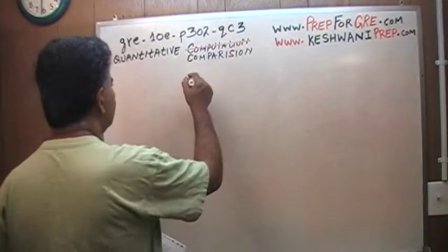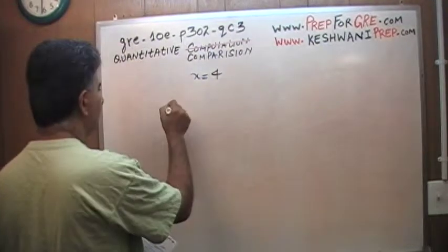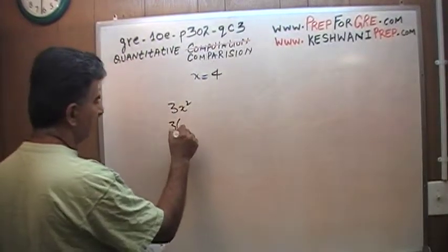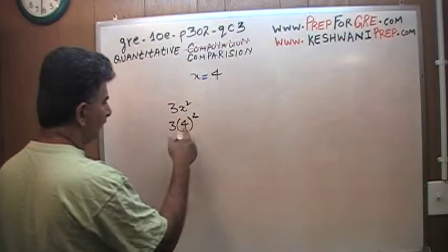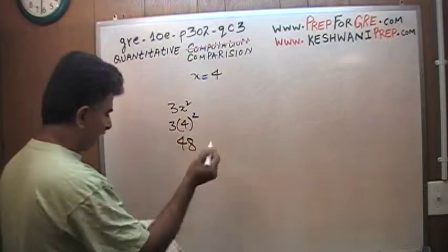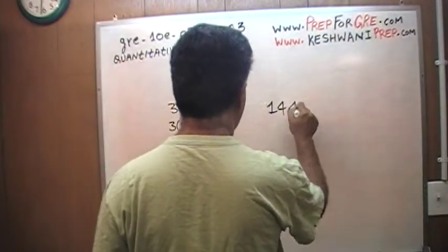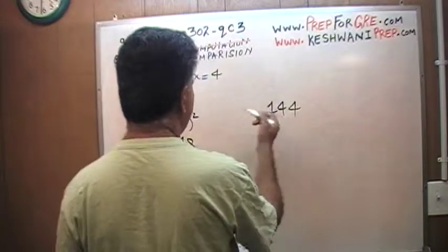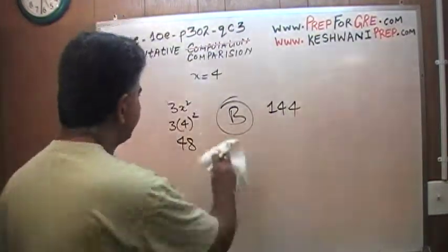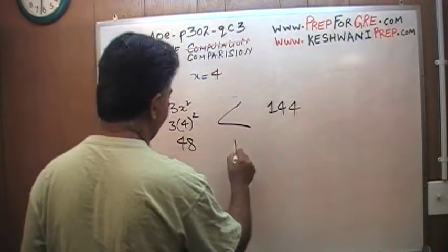They tell you that x is 4. If x is 4, they ask you how much is 3 times x squared. Well, 3 times x squared: 4 squared is 16, and 16 times 3 is just 48. It's very simple. And in the other column, they give you 144. Of course, B is bigger — that's all. 144 is bigger than 48, so the answer is B.